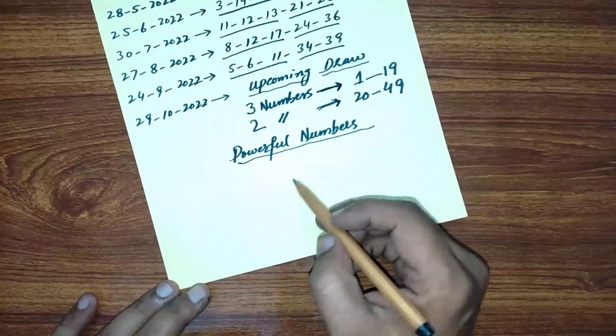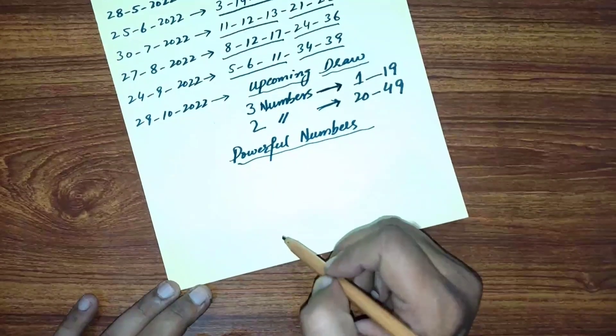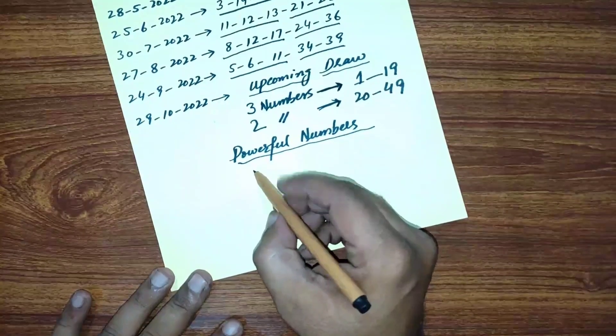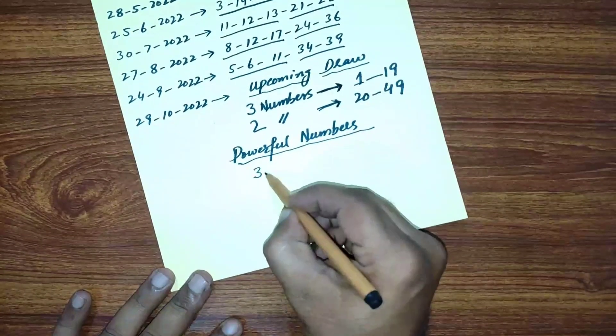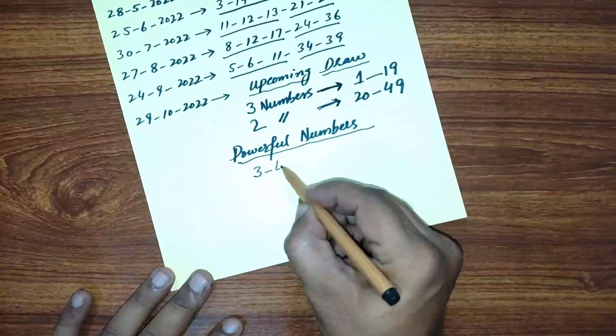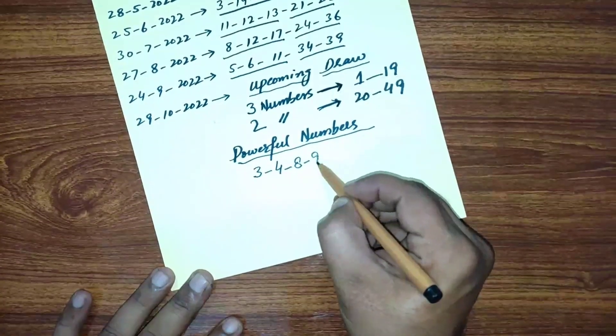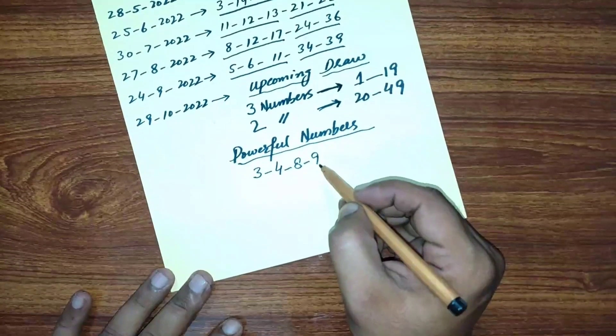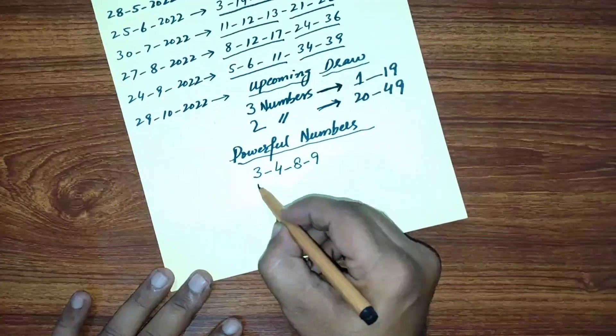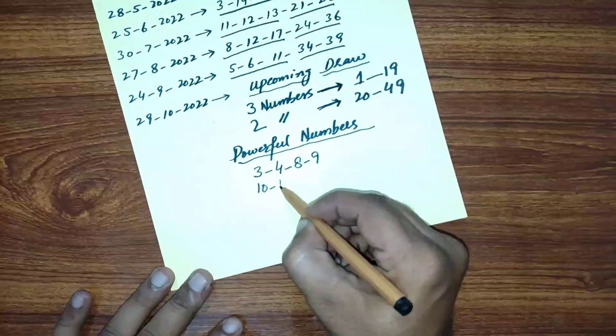Next step, my powerful numbers for this draw. From 1 to 9, I have four numbers: 3, 4, 8, and 9. From 10 to 19, I have also four numbers: 10, 13, 14, and 18.